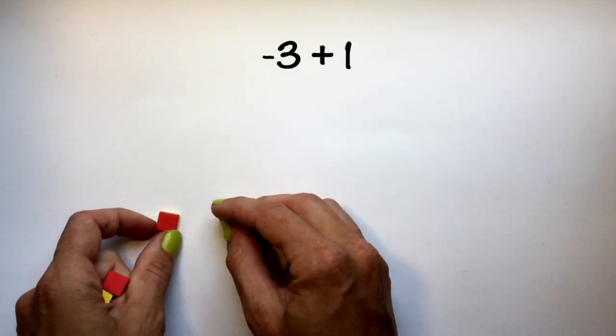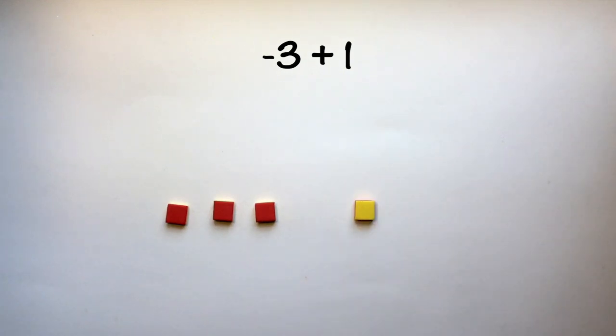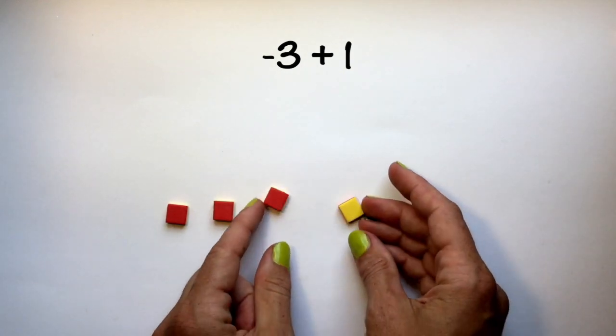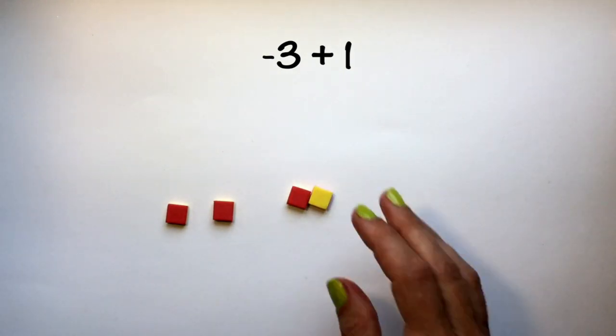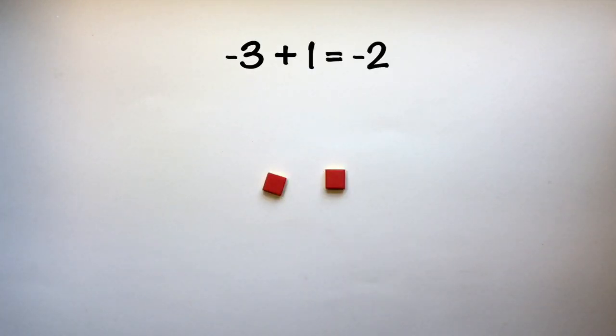Negative 3 plus positive 1. We can create one zero pair, remove it, and we are left with negative 2.